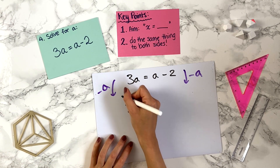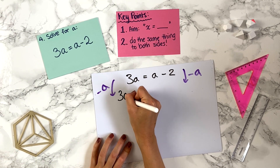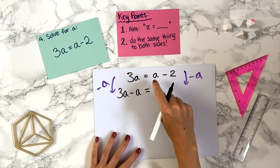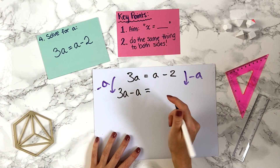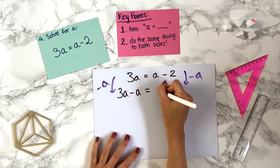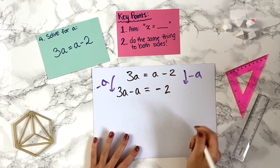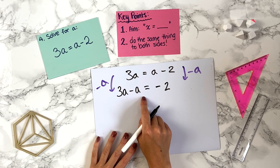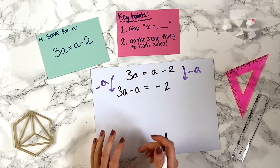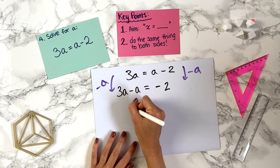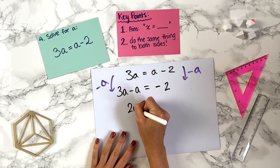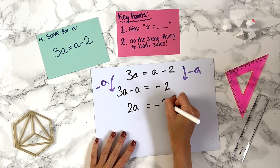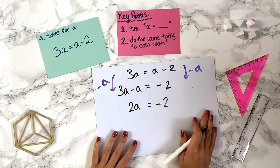To get rid of the a on the right-hand side, we minus a from both sides. On the right, a minus a goes to zero, leaving minus 2. On the left, we have 3a minus a — both terms have a single a, so we can combine them: 3a minus a is 2a. So we have 2a equals minus 2.